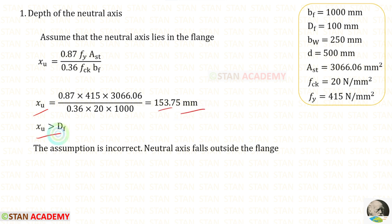XU is greater than DF, which is 100 millimeters. In this case, our assumption is incorrect. The neutral axis falls outside the flange.